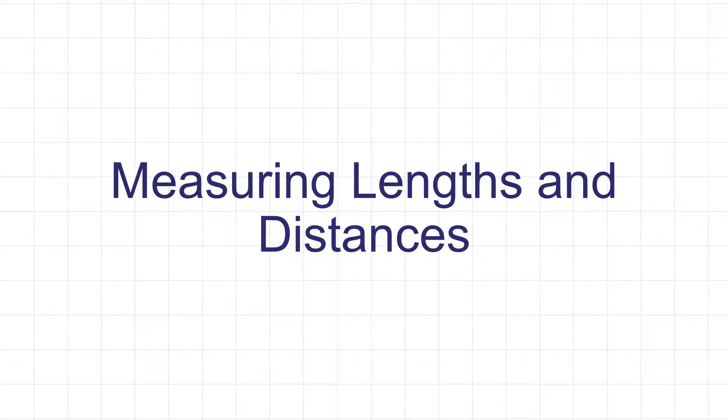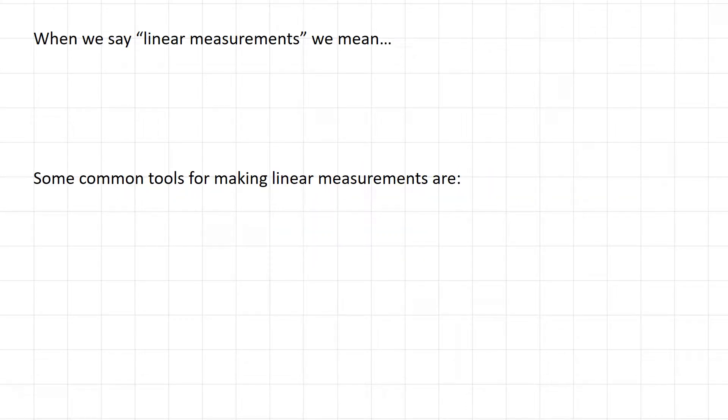Here we'll talk about how we measure lengths and distances with metric units. When we're talking about linear measurements, we mean lengths or distances. That doesn't just have to be straight lines—it could be curved lines too, like the distance around a lake. Even though it's not a straight line, it's still something that you could measure.